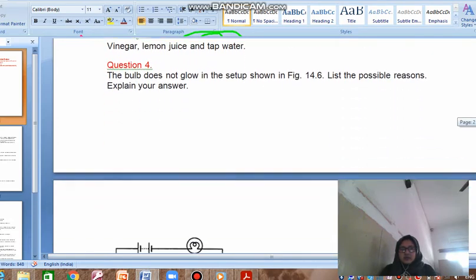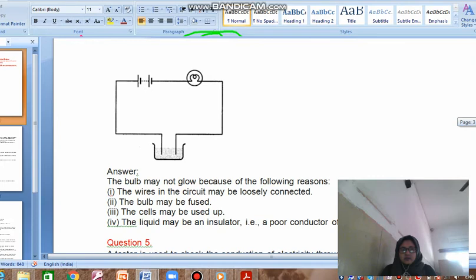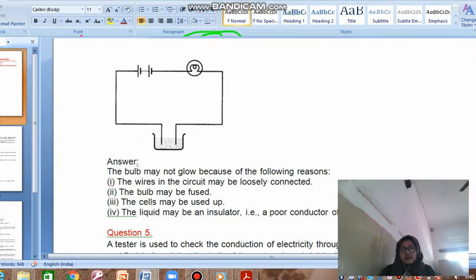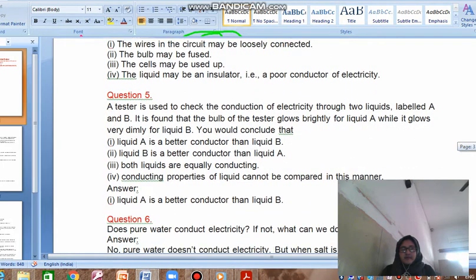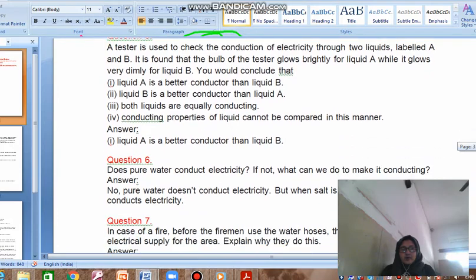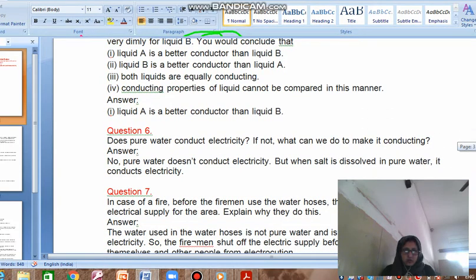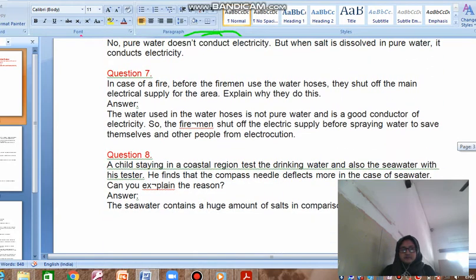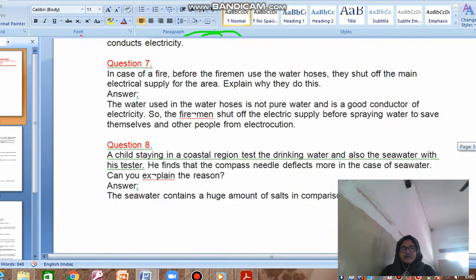Why does the bulb not glow? They have given a lot of reasons - the wires may be loosely connected, the bulb may be fused, the cells may be used up, and the fourth one, the liquid may be an insulator. Does pure water conduct electricity? No. But what we can do to make it more conducting? We can add salt to it.